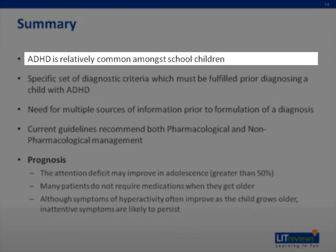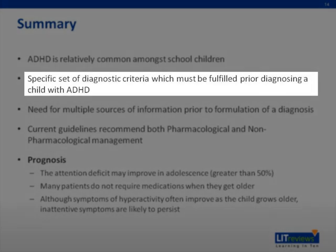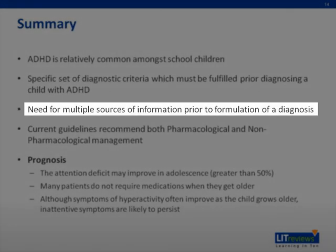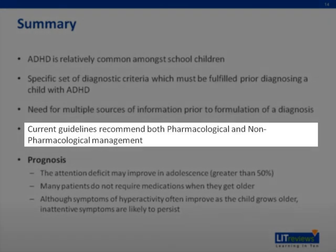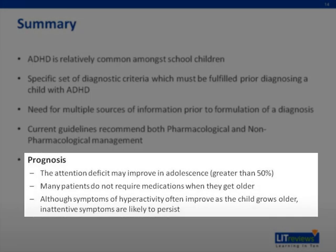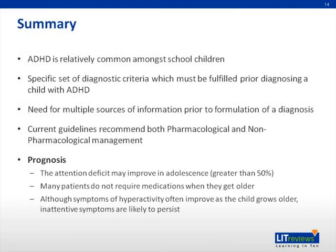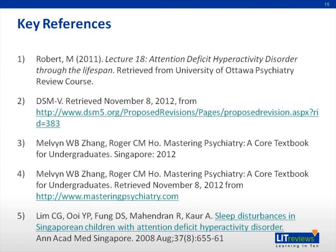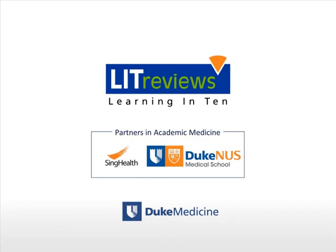In summary, ADHD is relatively common among school children. A specific set of diagnostic criteria must be fulfilled prior to diagnosing a child with ADHD, and there is a need for multiple sources of information prior to the formulation of a diagnosis. Current guidelines recommend both pharmacological and non-pharmacological management. In terms of prognosis, the attention deficit may improve in adolescents — greater than 50% of adolescents improve in terms of attention deficit, and many patients do not require medication when they get older. Although symptoms of hyperactivity often improve as the child grows older, maladaptive symptoms are likely to persist. Key references are as documented. Thank you.